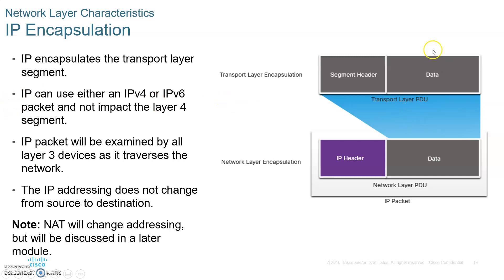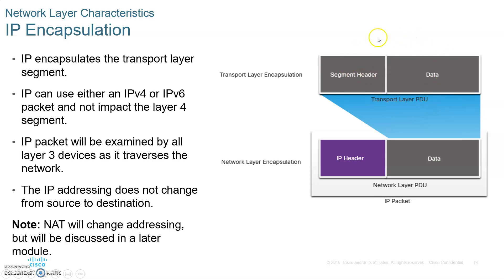So encapsulation: you take the data from layer seven, and when you add a layer four segment header to it, this whole thing is called a segment — that's what the transport layer protocol data unit is called. All of the segment is placed in here, and when you add IP headers to it, this whole thing becomes a packet.